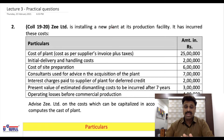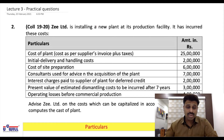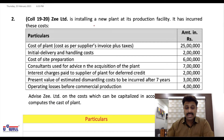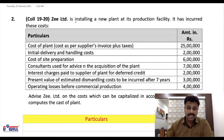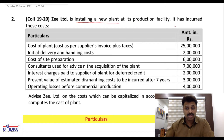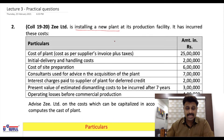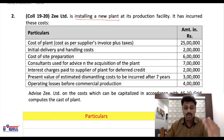Today's lecture is completely based on what we did in Lecture 2. Take out your study material — Question Number 2 — and your notebooks. Let us start solving it. Z Limited is installing a new plant at its production facility. Installing a new plant means buying or constructing it — either is possible. It has incurred these costs, which we studied in the last lecture.